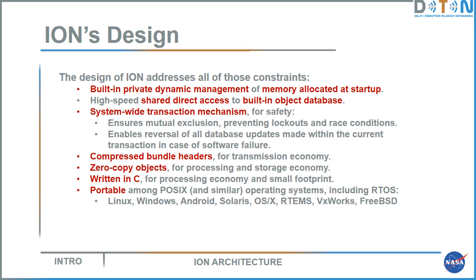When a bundle is received, it is placed in one location in storage. As it is passed up and down the protocol stack, instead of making copies in buffers used by different protocol layers, the data remains in one place and a zero-copy object structure containing references to memory and file system locations is passed up and down the stack. Bundles are never copied from one buffer to another. ION is written in C for processing economy and a small footprint, with as little language overhead as possible. It is portable among essentially all POSIX-based and POSIX-like operating systems including real-time operating systems, running on Linux, Windows, Android, Solaris, OSX, RTEMS, VxWorks, and FreeBSD.